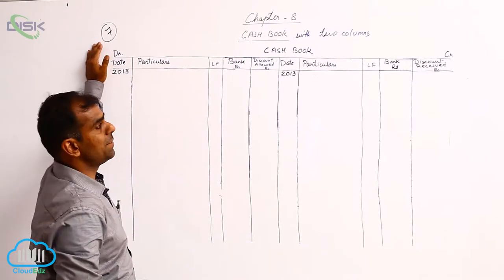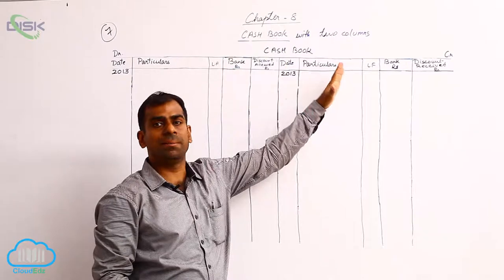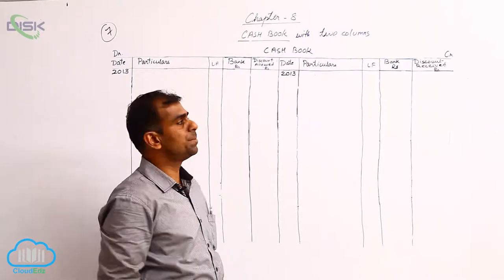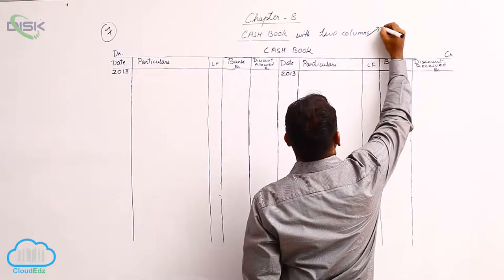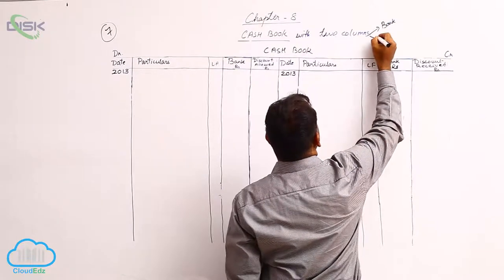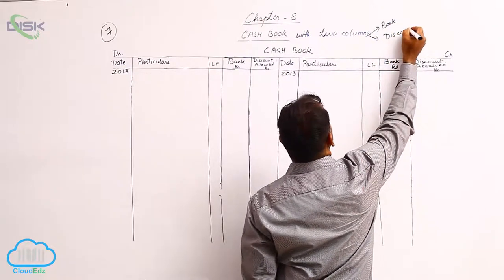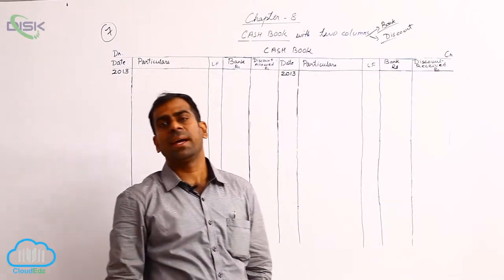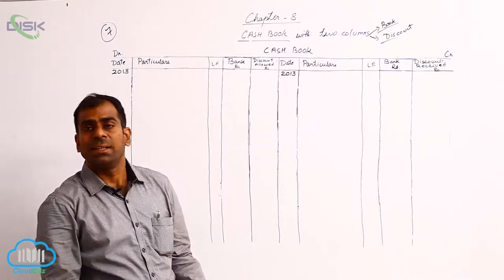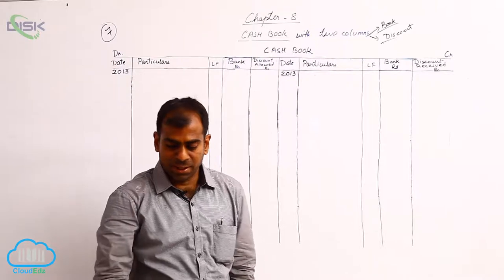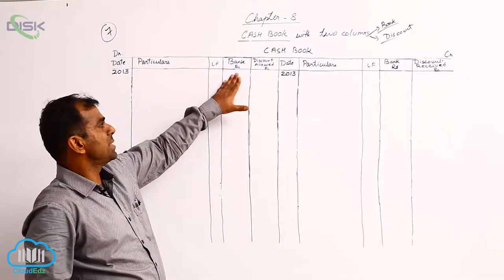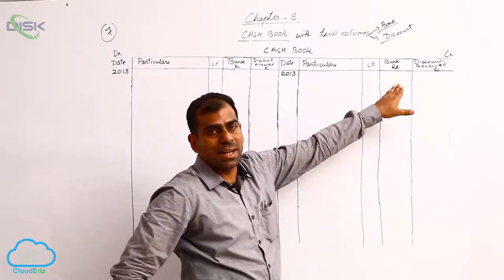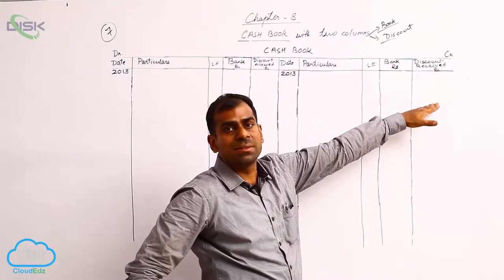We are discussing the seventh problem in which you are instructed to prepare a double column cash book. The two columns instructed are bank and discount. So it is a modern business which banks all its money — it receives and deposits all money through the bank. On the debit side we have bank and discount allowed columns, and on the credit side we have bank and discount received columns.